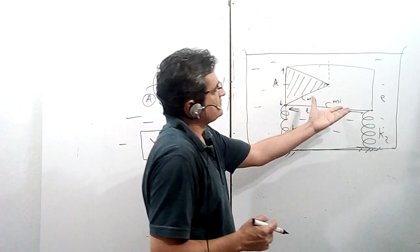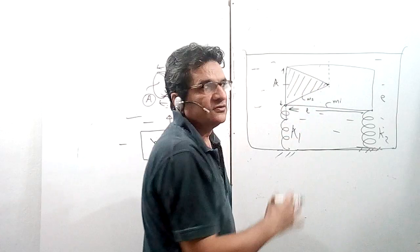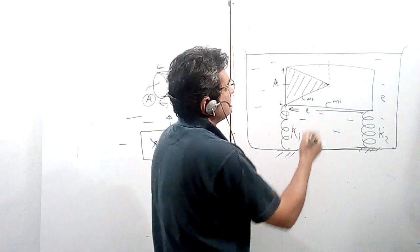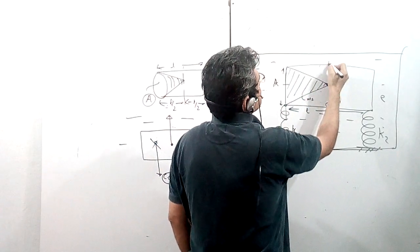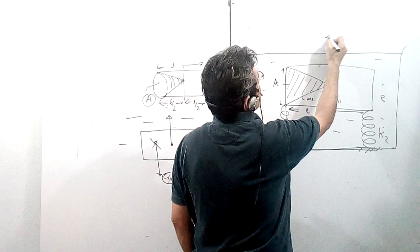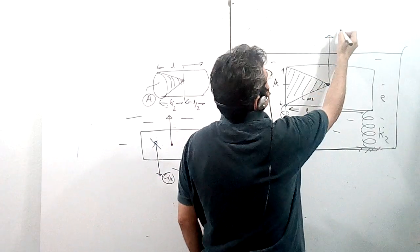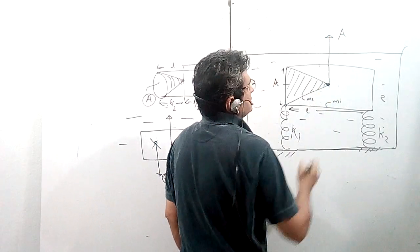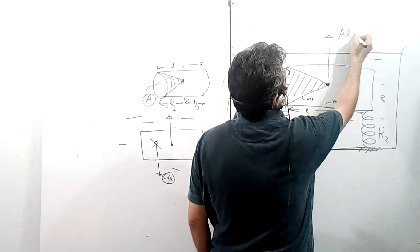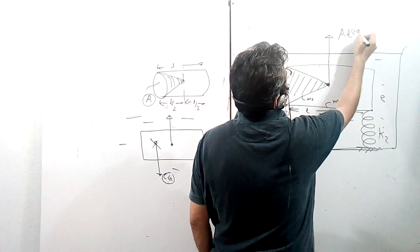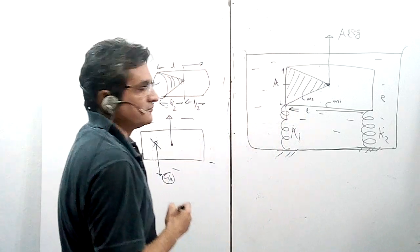Weight distribution within the volume only determines the center of gravity. As far as this cylinder is concerned, looking at the volume, the center of buoyancy will be at the geometric center, and the buoyant force acting upward there will be A times L times rho times g.